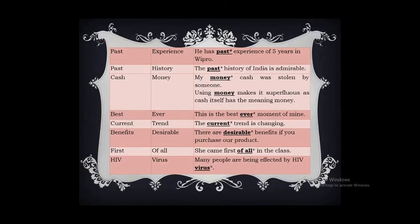'Past experience' — experience itself is something we have learned or gained in the past, so using 'past' again is superfluous. The correct form is: 'He has five years of experience in Wipro.' 'Past history' — history is something that happened before and is no longer existing; 'past' has the same meaning, so using both is an error. 'Cash money' — cash means money in coins or notes, so using 'money' again is superfluous. The correct form is: 'My cash was stolen.'